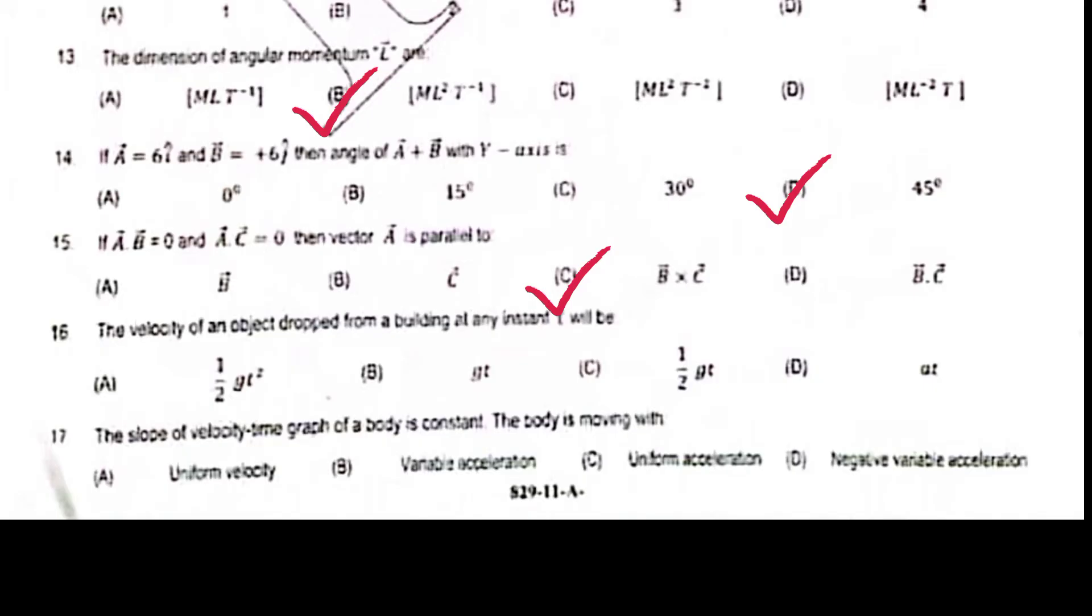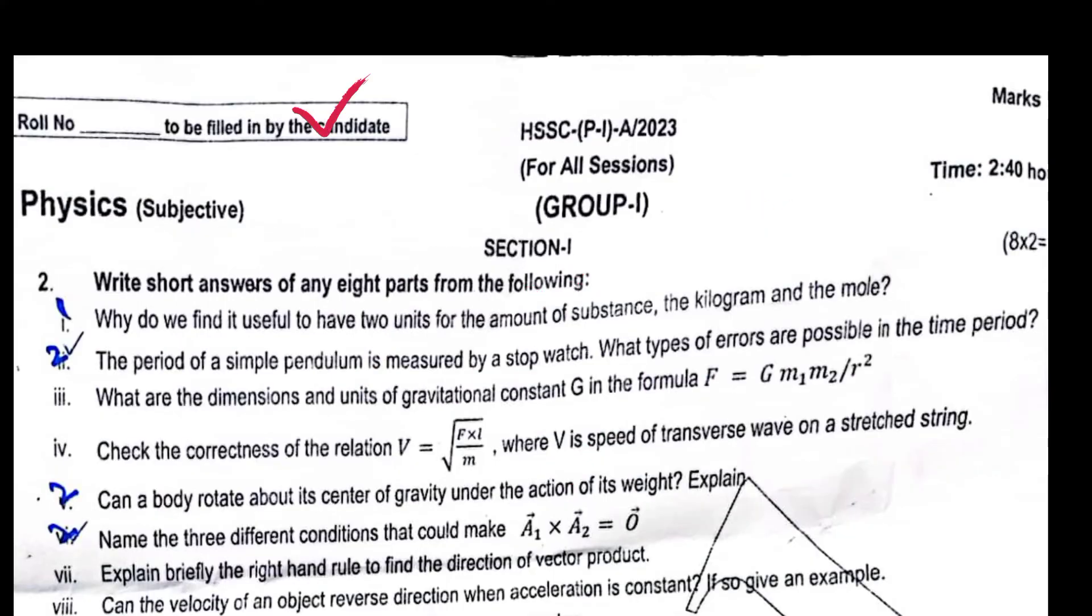The velocity of an object dropped from a building at any instant will be gt. The slope of velocity-time graph of a body is constant, then the body is moving with uniform acceleration.